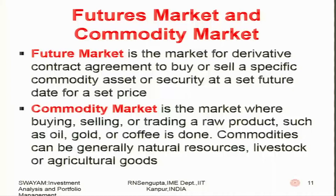The commodities market is where buying, selling, or trading of raw products such as oil, gold, coffee, log, and livestock are done. Commodities can generally be natural resources, livestock, and agricultural products like maize, barley, cotton, grain, and so on and so forth.